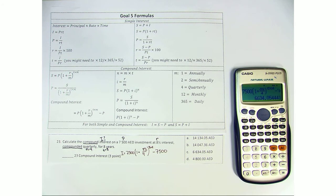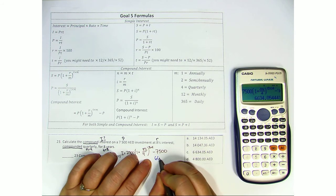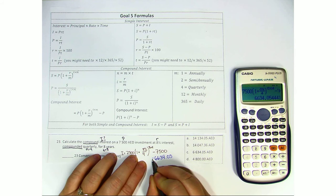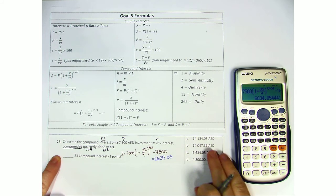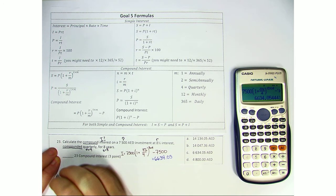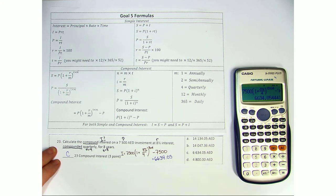And what we get is 6,634.05 in interest. So if you look here, that's choice number C from the multiple choice options.